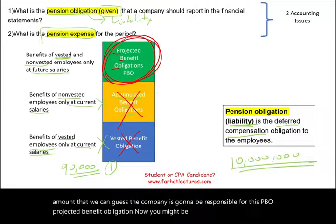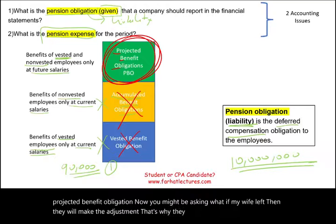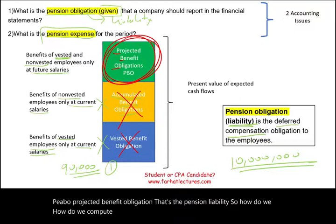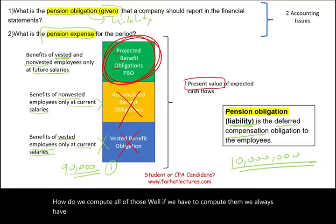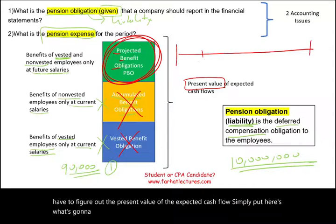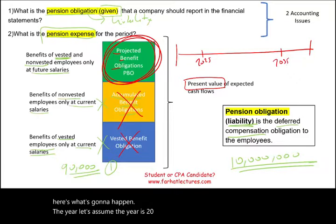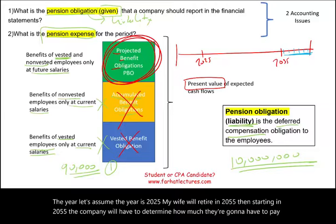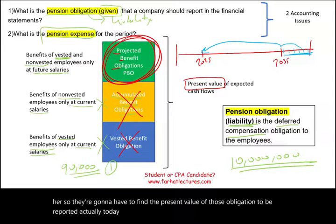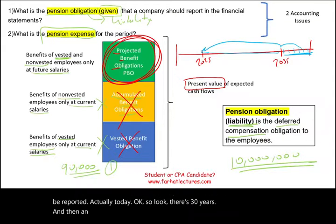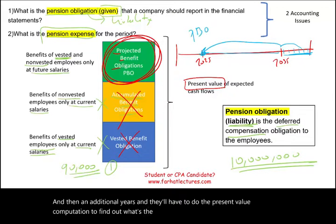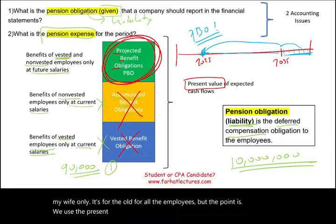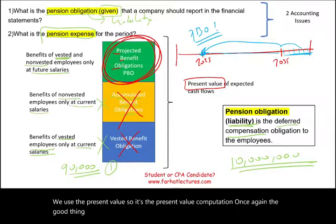We don't use vested benefit obligation or accumulated benefit obligation on the financial statements — we use the largest amount, the projected benefit obligation (PBO). If an employee leaves, the actuary will make the adjustment. PBO is the pension liability. To compute these, we always find the present value of the expected cash flows. For example, if my wife retires in 2055, the company has to find the present value of those future obligations to report today. The good thing is we don't have to compute this — it's given to us.